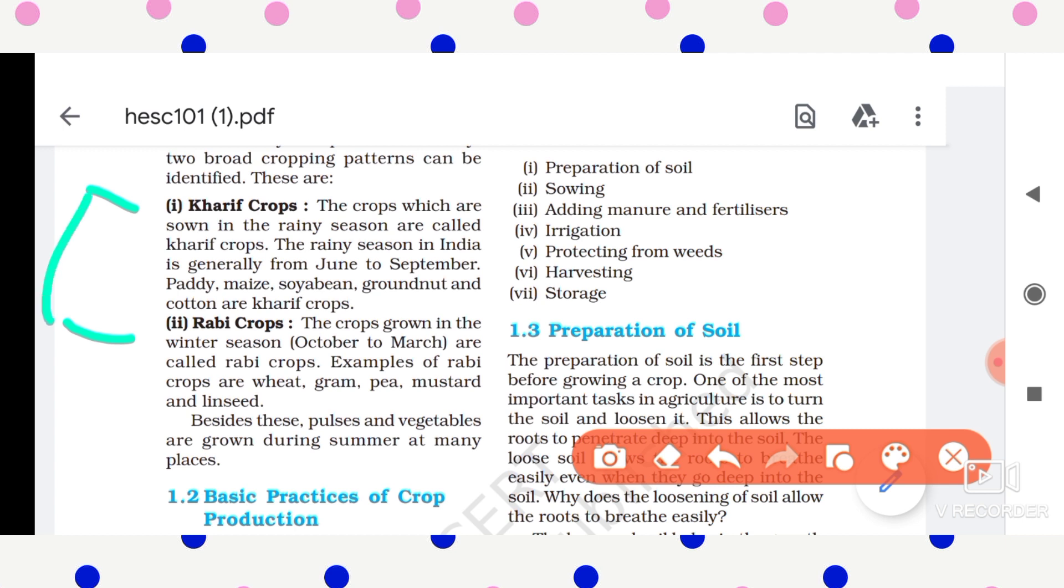These were two types of crops: one is kharif crops, the other is rabi crops. Kharif crops are sown in the rainy season, whereas rabi crops are sown in the winter season. The rainy season in India is from June to September, and the winter season in India is from October to March.